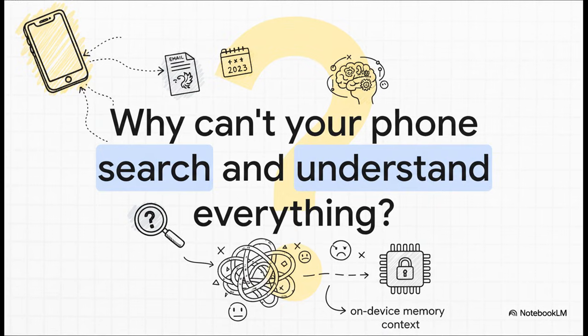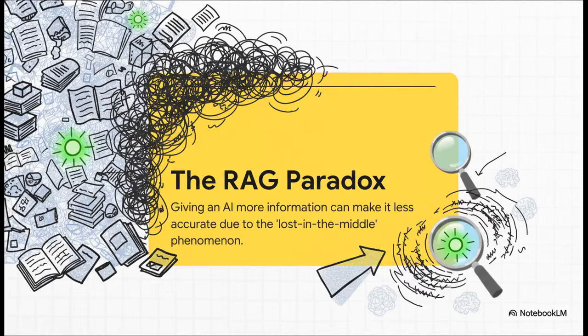And that brings us to the real heart of the problem. It's something called the RAG paradox. Now RAG, that's Retrieval Augmented Generation, is how most AIs get outside information. But here's the crazy part. The more raw data you throw at it to find an answer, the worse it can actually get. It's like the important facts get buried in the middle of a giant pile of junk. It's a massive signal-to-noise problem, and it's been a huge roadblock for powerful AI on our devices.